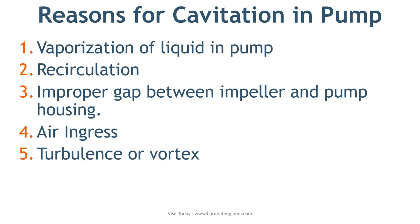As a rule of thumb, NPSH available should be 3 feet more than NPSH required. The second reason for cavitation is recirculation. Recirculation happens when the discharge is restricted — when liquid cannot exit the pump, it starts recirculating, leading to a rise in liquid temperature and creation of vapor bubbles. The third reason is an improper gap between the impeller and pump housing. If that gap is very low, liquid passing through at high velocity will lead to cavitation.